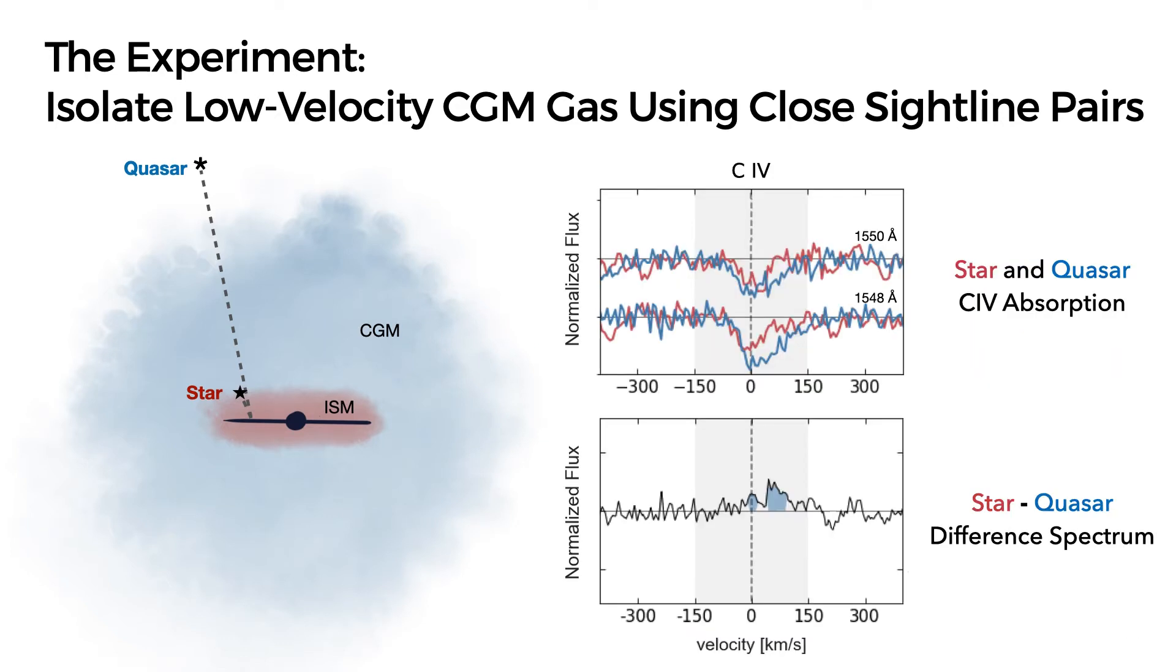Here's what this looks like in practice. The top panel is showing absorption from the carbon-4 doublet, where blue is the quasar and red is the star. The bottom panel shows the difference spectrum, the excess absorption in the quasar originating beyond the halostar.